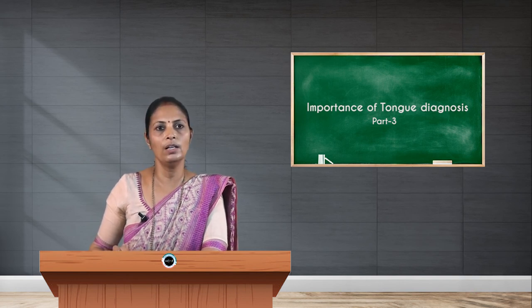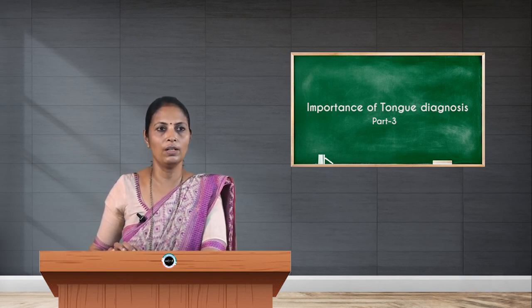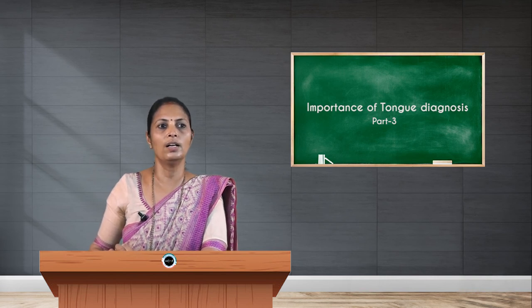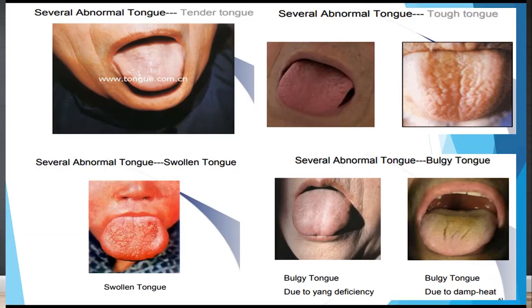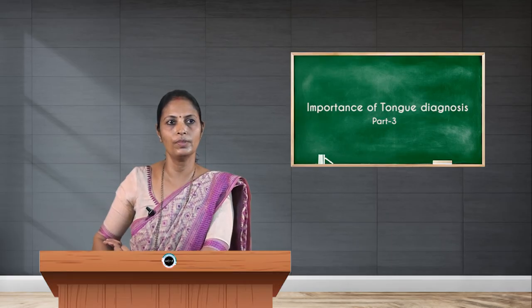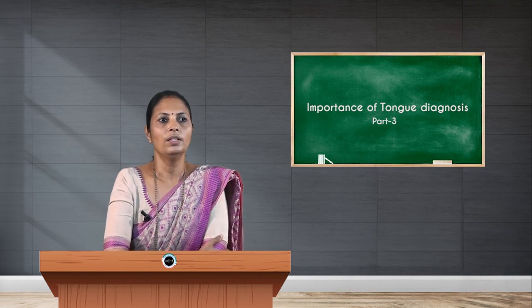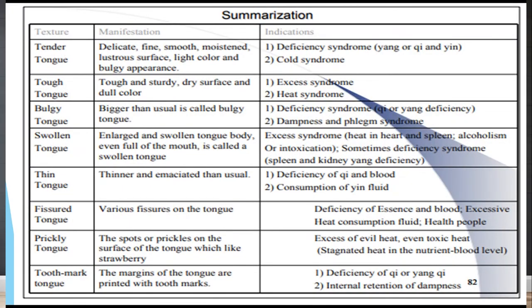A tender tongue presents with pain, reddish color, and sensitivity to touch. A bulky tongue may have cracks, especially in the stomach and GI area, which indicates severe disturbance in digestion.